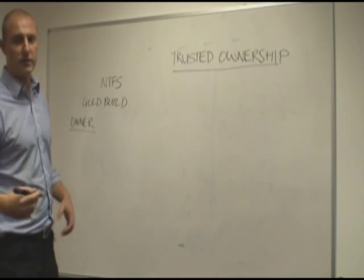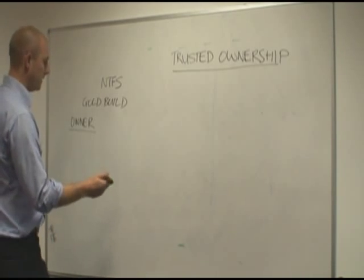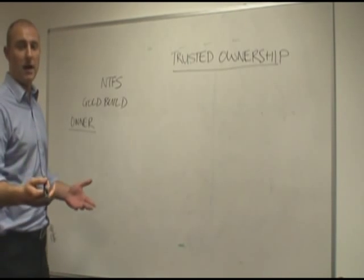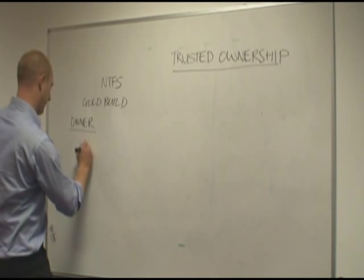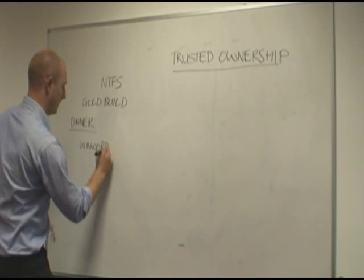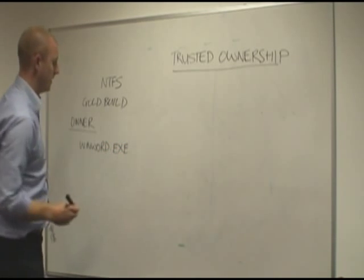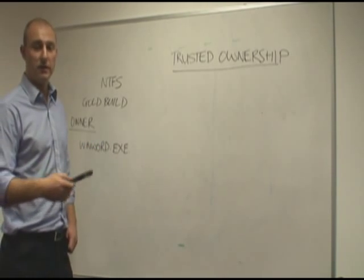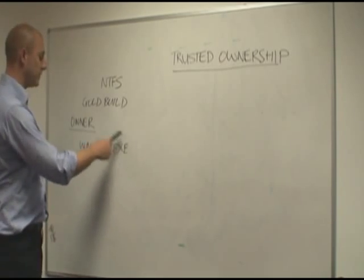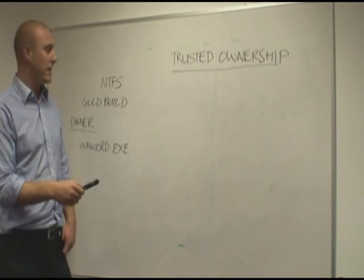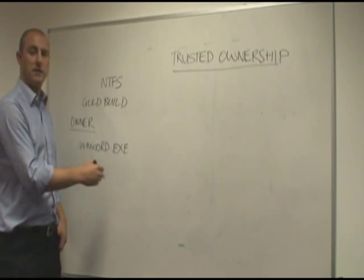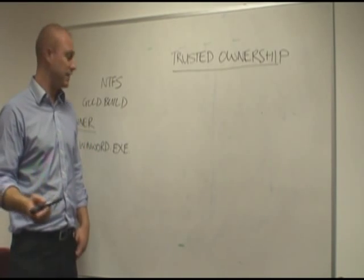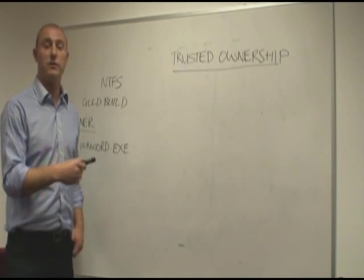So then you let your users loose on those endpoints. A user logs onto one of the desktops and runs an executable that's been installed by the administrator. Because we follow best practices and install this application with what we class as a trusted owner — the administrator's account, for instance — when this user runs this executable, runs this application, the Application Manager product intercepts the request for the executable to be processed, and before it actually hits the processor for actual processing, Application Manager does a process known as trusted ownership checking.